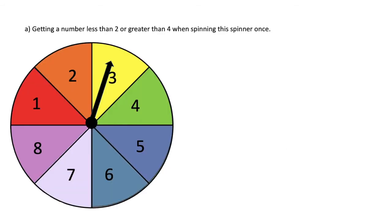Let's consider the example of getting a number less than 2 or greater than 4 when spinning the spinner once. The first thing that we are going to ask ourselves is can this happen in more than one way? The answer is no.